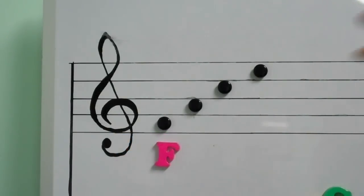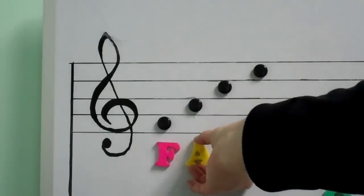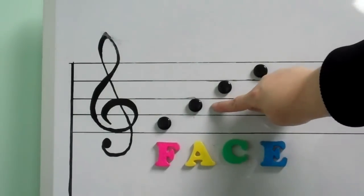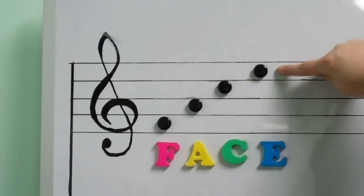Another way to remember the spaces on the treble staff is just simply spelling the word FACE: F, A, C, E. The spaces on the treble staff are F, A, C, and E.